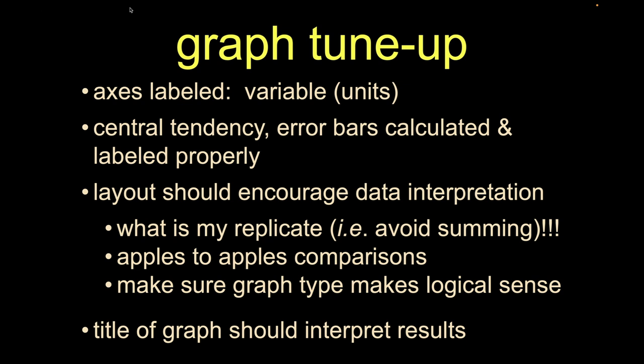In particular, what is your replicate? What is my thing that I'm graphing? Am I graphing the average of a thing? Am I graphing an individual point? And remember, we're always trying to make apples to apples comparisons. And we want to make sure the graph makes logical sense. So for us, our defaults are typically scatter plots, maybe some bar charts, maybe a line graph. But those are not interchangeable. It's not an aesthetic thing that we're choosing. There's different reasons why we might choose one of those or the other.